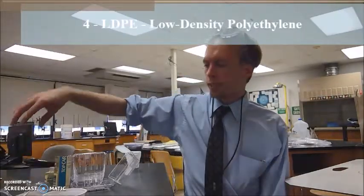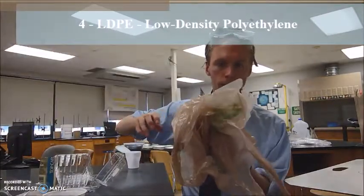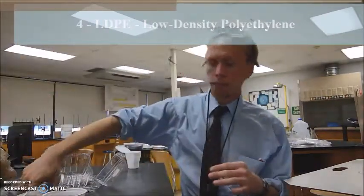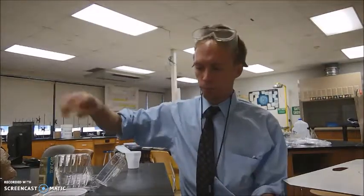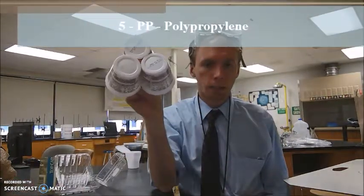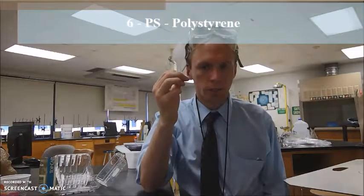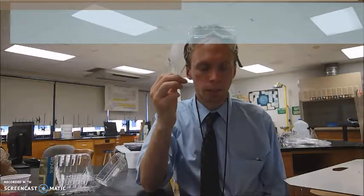Next, number four is low density polyethylene, LDPE. You're going to find these in disposable plastic bags and in six-pack containers. Number five is polypropylene. You'll find it in common consumer product plastics. Number six is polystyrene. One of its most common applications is in disposable plastic utensils.